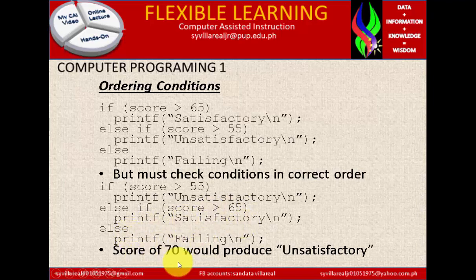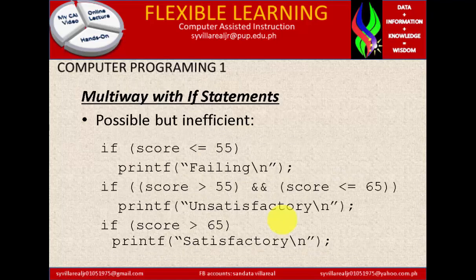A score of 70 would produce unsatisfactory in the incorrect version. The best approach is to keep conditions in sequence, because if-else is also identified in a sequence formation.